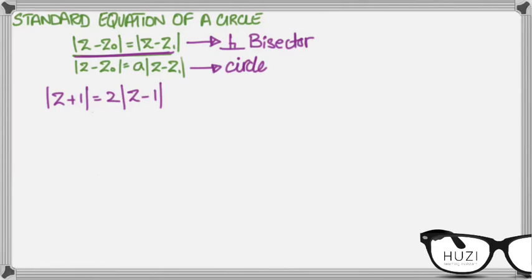So, first we'll convert z into x plus iy. This would become x plus 1 plus iy. We bring together the real part, x plus 1. And over here, this would be x minus 1 plus iy.